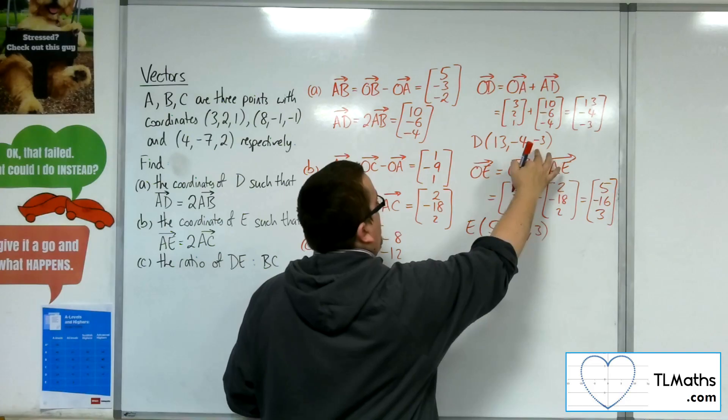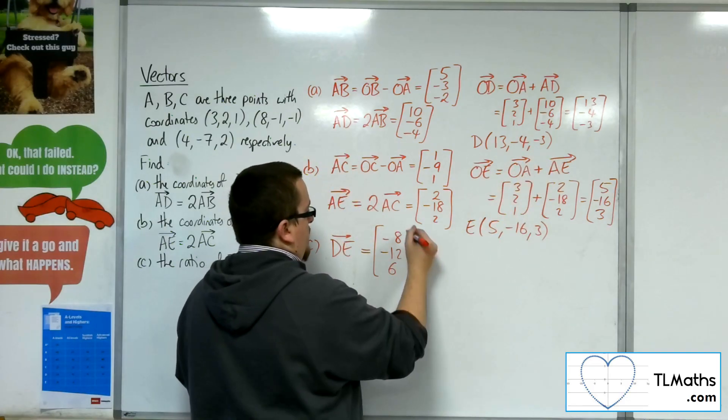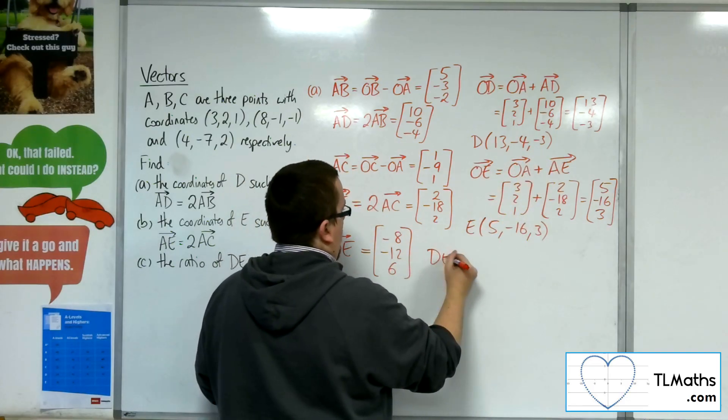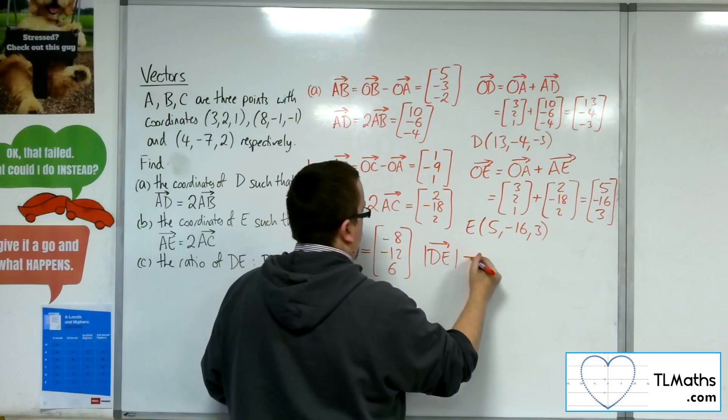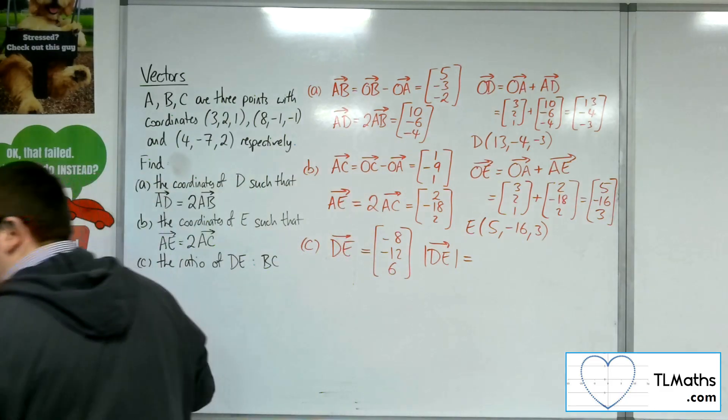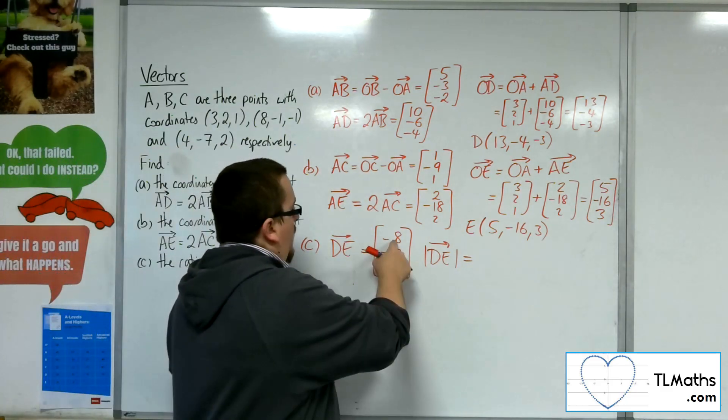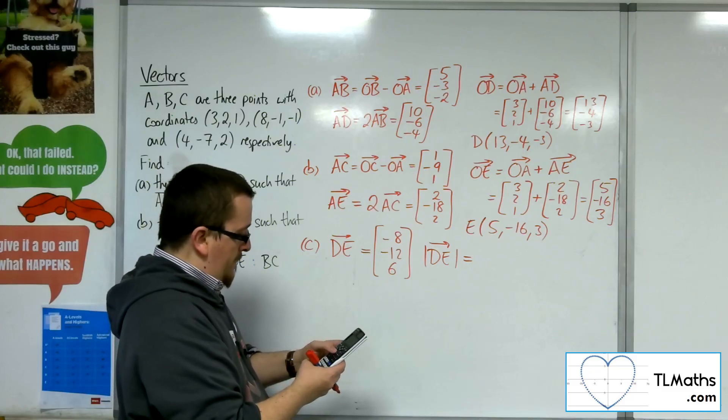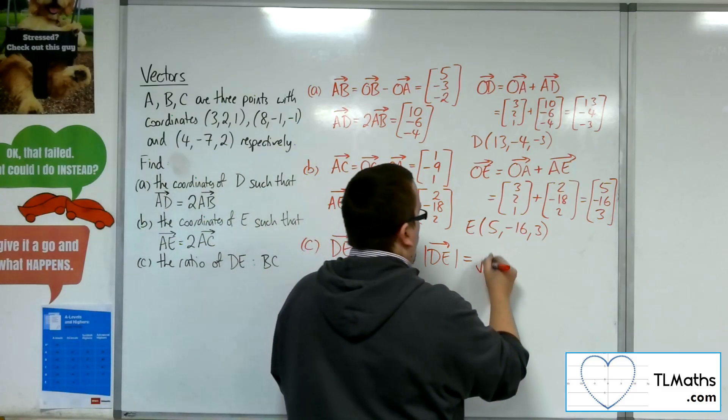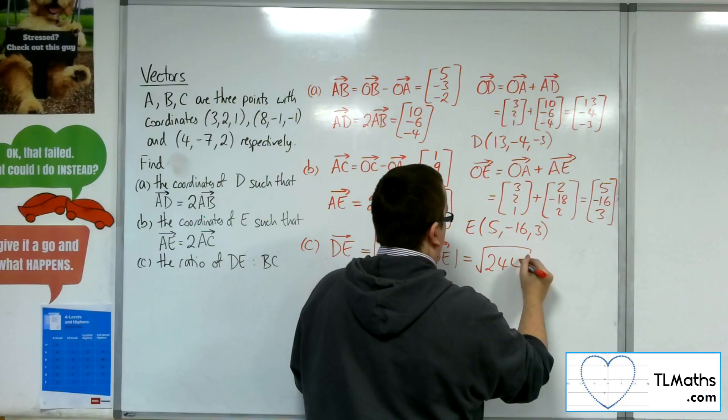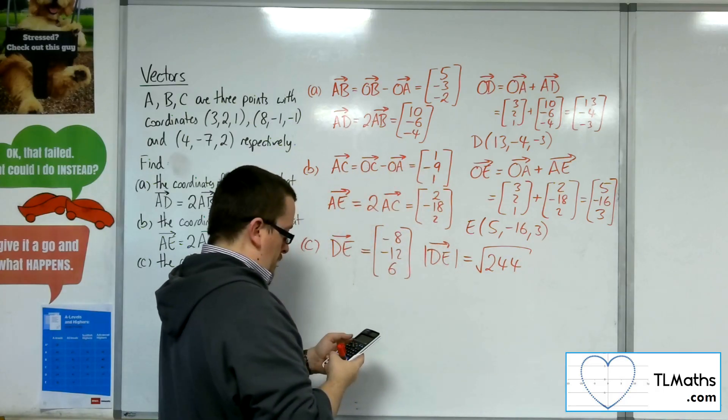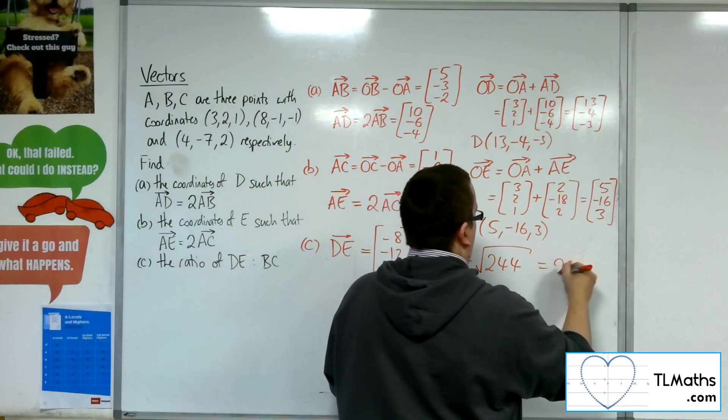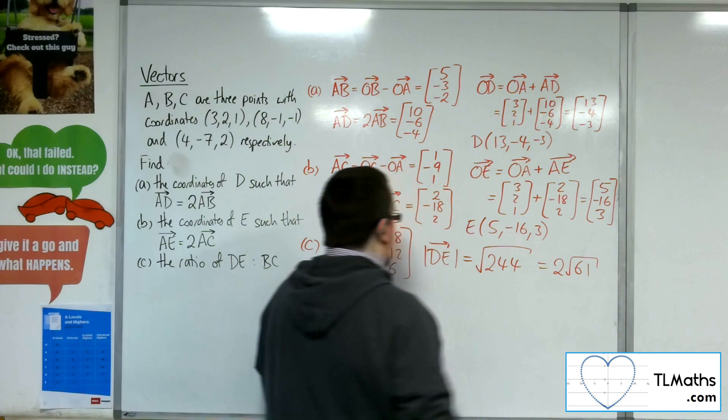And 3 take away minus 3 is 6. So the length of DE is equal to 8 squared plus 12 squared plus 6 squared, which is 244 square rooted. So that's 2 root 61. So that's DE.